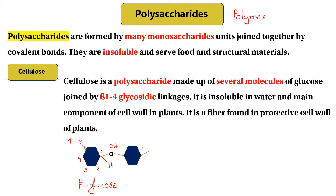If you use the OH group at carbon-1 and carbon-4, and H2O, you can use oxygen. Then you can use glucose. This glucose can also be used as a glycosidic linkage — a glycosidic bond.